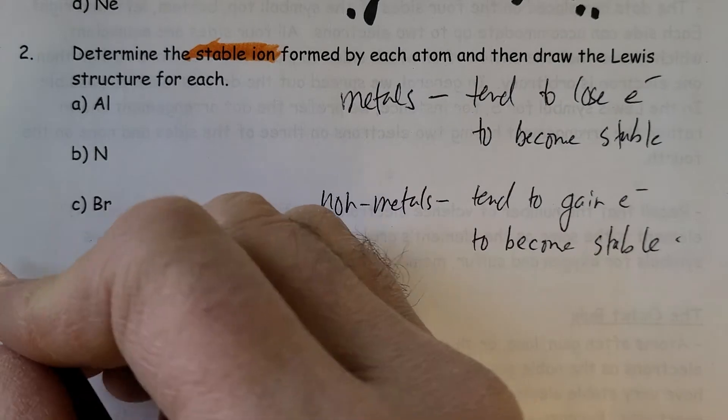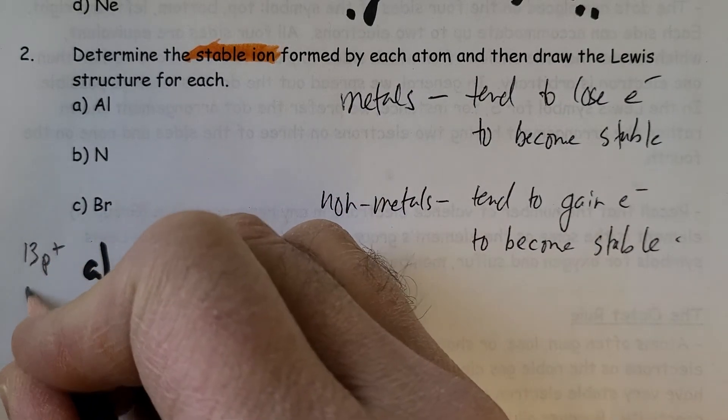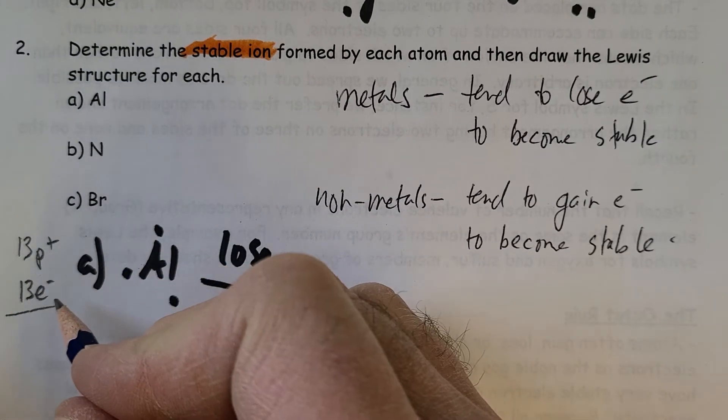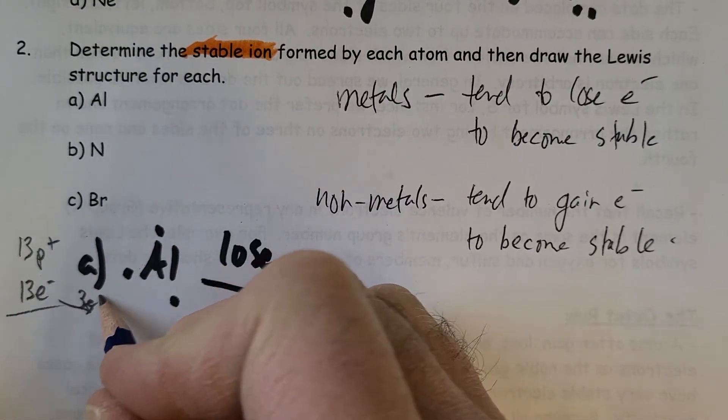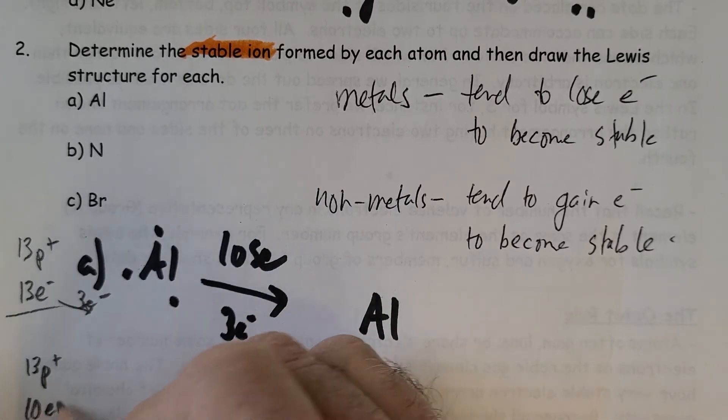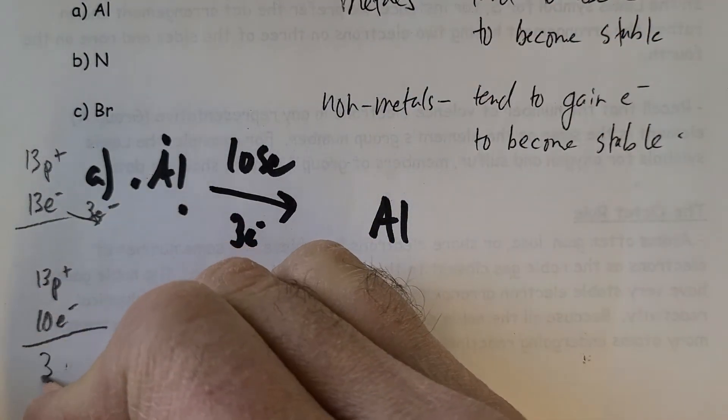Atomic number 13 implies that aluminum had 13 protons and 13 electrons. But if it loses three electrons, it now has 13 protons and 10 electrons.